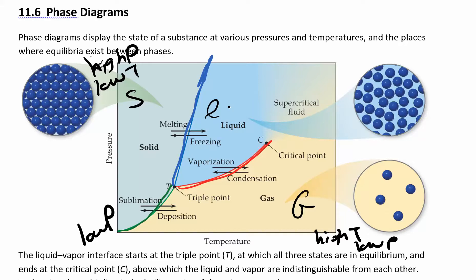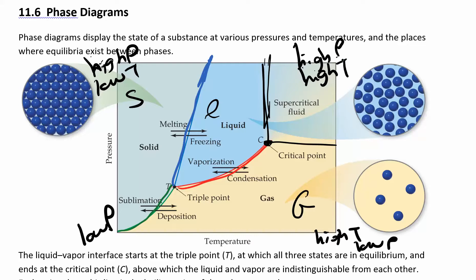The crazy thing is that at a certain point — the end of the liquid-gas line — if you increase the pressure or temperature any more, you get this really confused phase of matter called a supercritical fluid. This happens when you have both high pressure and high temperature. High pressure is forcing the molecules together, but high temperature means they have so much energy they're trying to get away from each other, giving you this really confused phase of matter: a supercritical fluid.